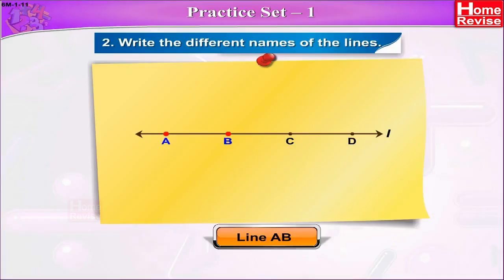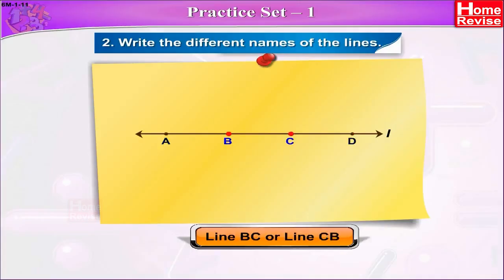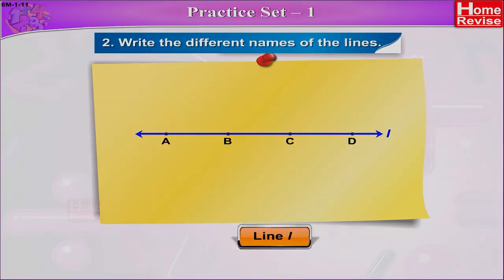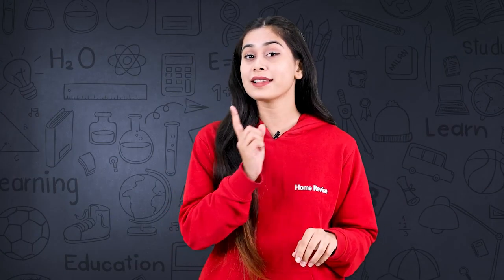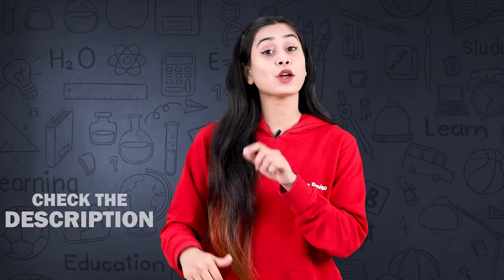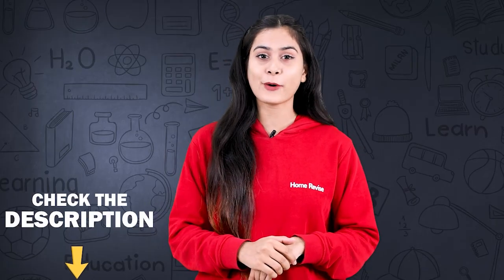Similarly, we can state other names for the line: line AC or line CA, line AD or line DA, line BC or line CB, line BD or line DB, line CD or line DC, and line L. If you want to see all your syllabus chapters in this format, call us using the details in the description. For more educational videos, subscribe to our channel Home Revice.